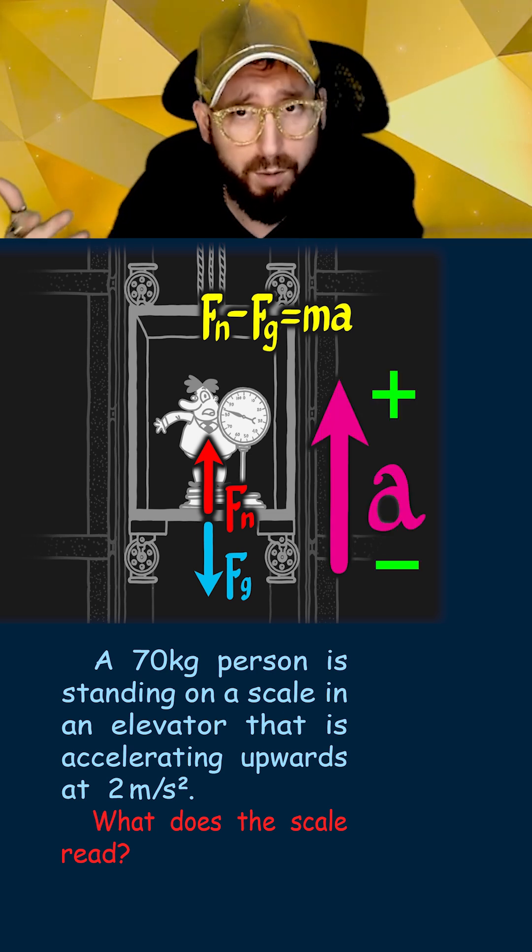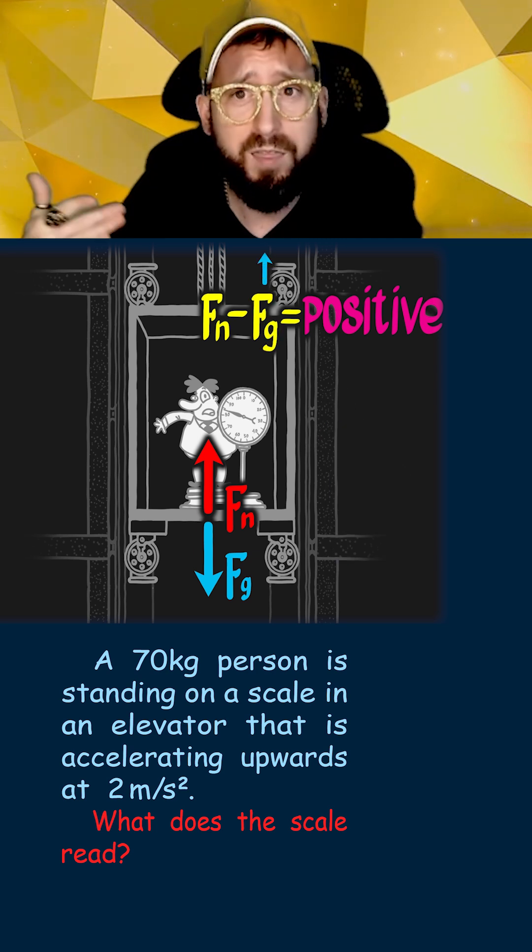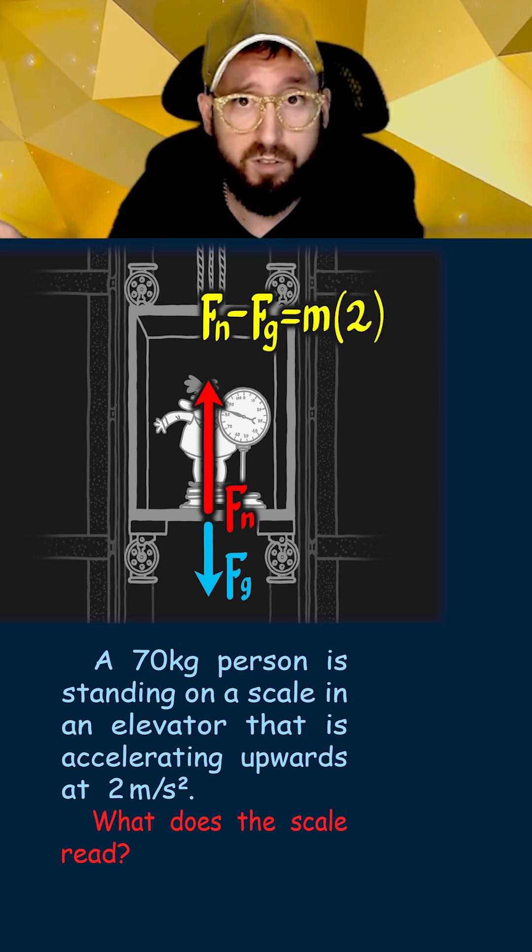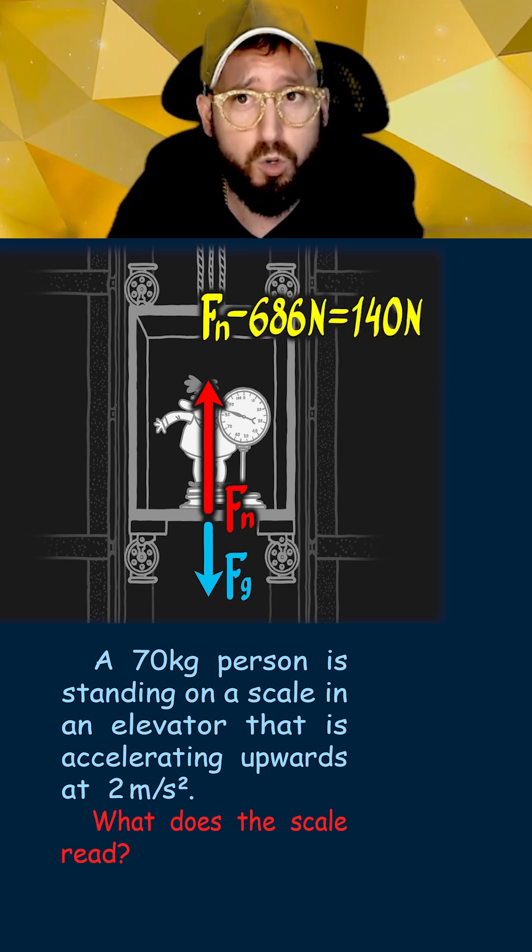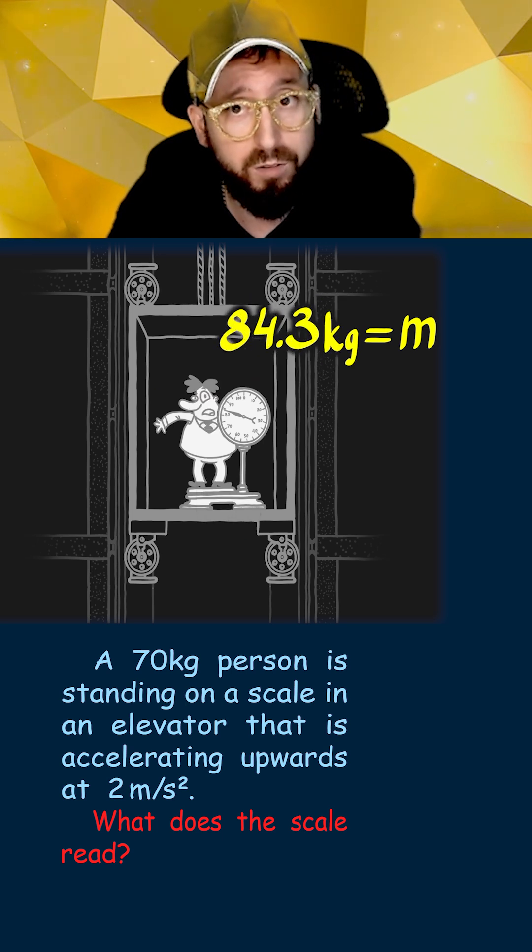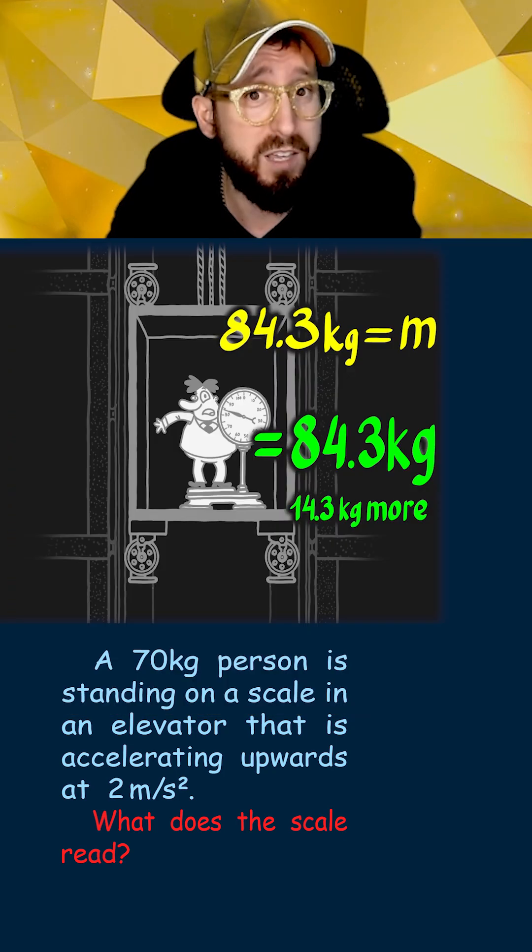If we look at our formula, we see that the sum of the forces now has to be positive, which since the force of gravity is always constant, this means that the normal force must now be bigger than the force of gravity. Plugging in our values and solving for the normal force, we get 826 newtons, which then dividing by 9.8 gives us an apparent weight of 84.3 kilograms. So in this case, the 70 kilogram person feels like they weigh heavier by 14.3 kilograms.